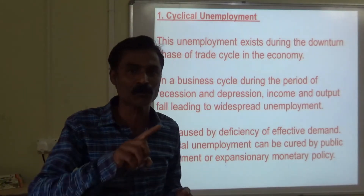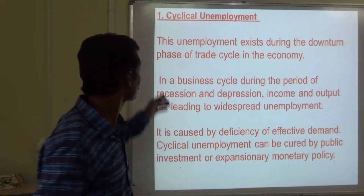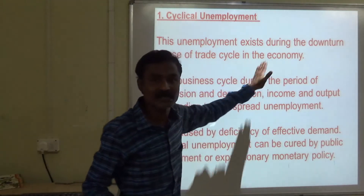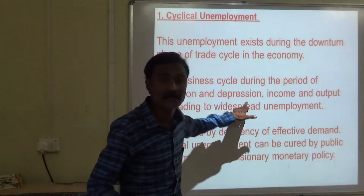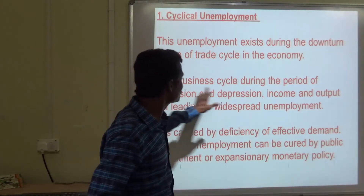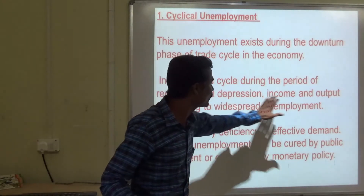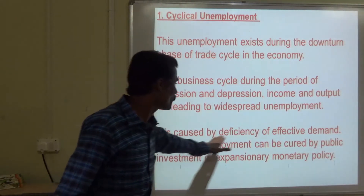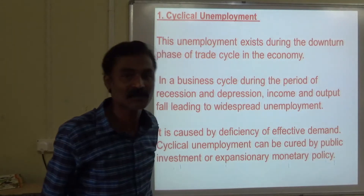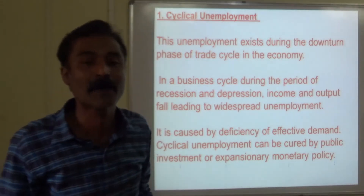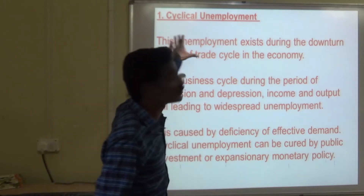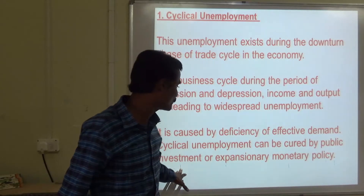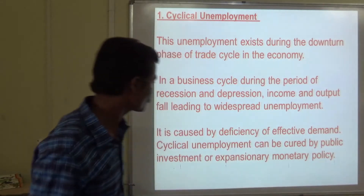As I mentioned in the first chapter about the trade cycle, cyclical unemployment exists during the downturn of the trade cycle in the economy — that is, recession and depression. During a period of recession and depression in a business cycle, income and output fall, leading to widespread unemployment. It is caused by deficiency of effective demand, meaning there is no demand in the market. Cyclical unemployment can be cured by public investment or expansionary monetary policy.